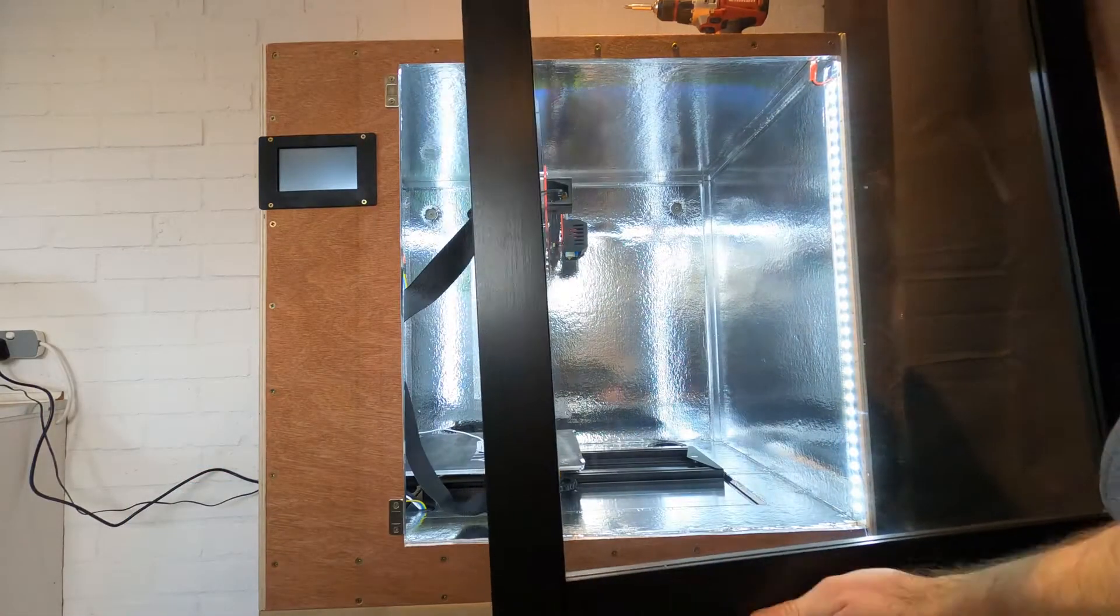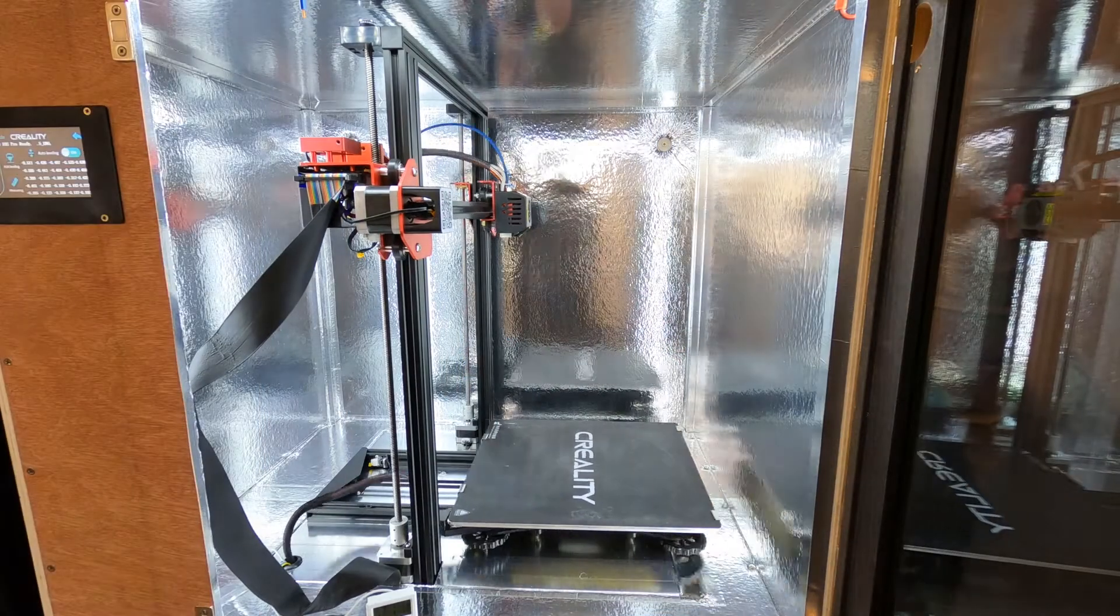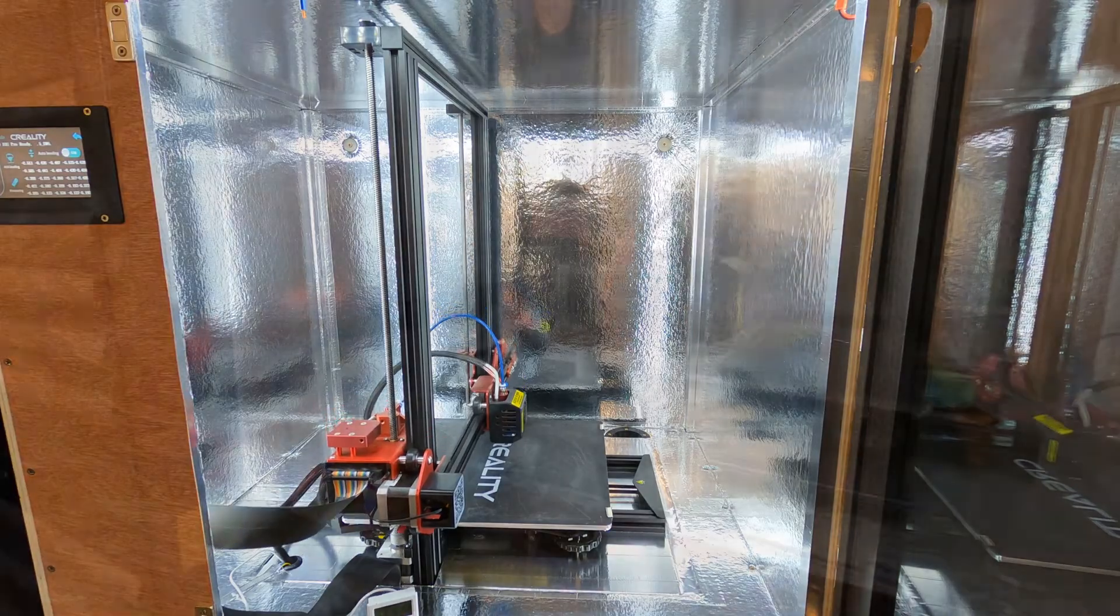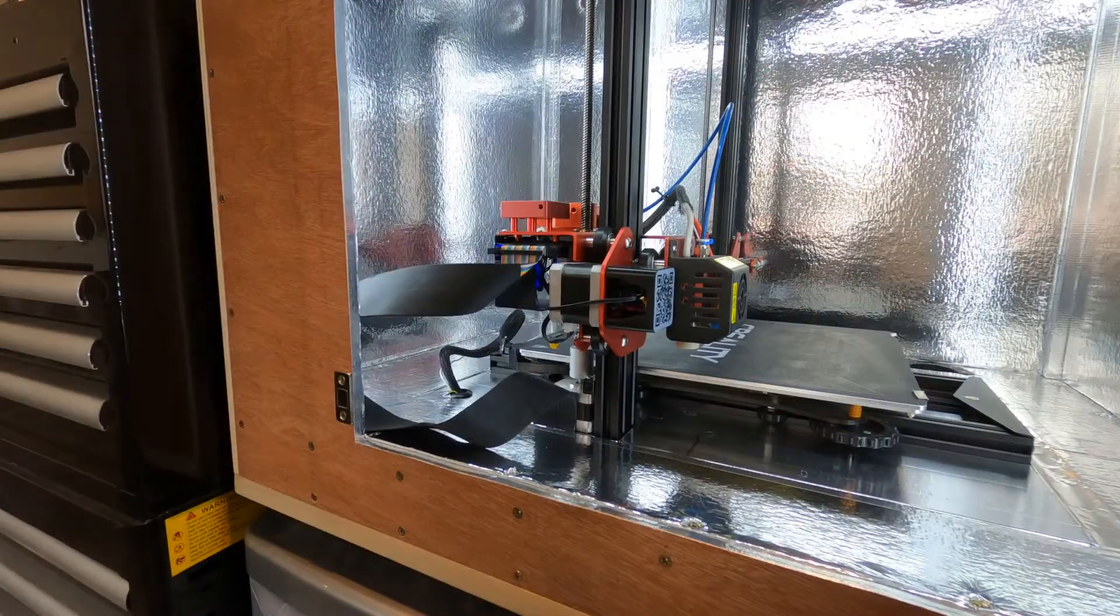Now you can attach the door and make sure the printer can move to its full extent without anything snagging anywhere. The large flat cable can be turned 90 degrees to easily fit inside the enclosure.